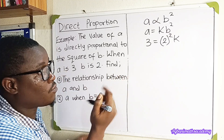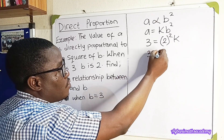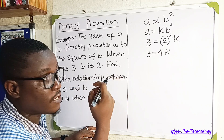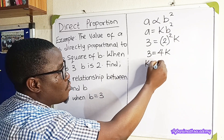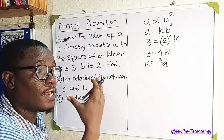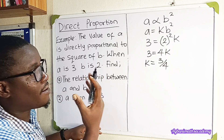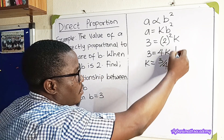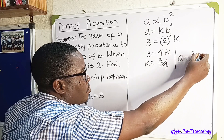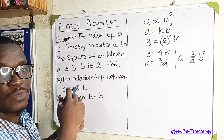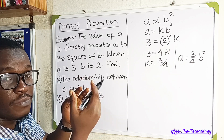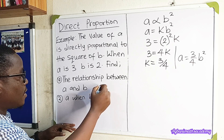We are told when A is equal to 3, B is equal to 2. So: 3 = K × 2² = K × 4 = 4K. Dividing both sides by 4: K = 3/4. So the constant of proportionality is 3/4. Therefore the relationship is A = (3/4)B². This is the actual relationship between A and B.